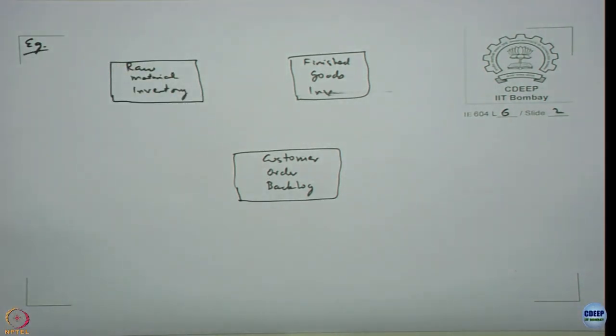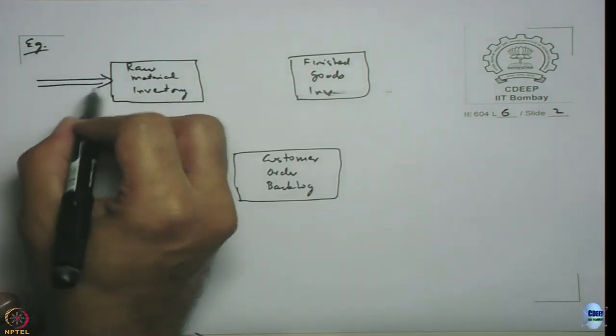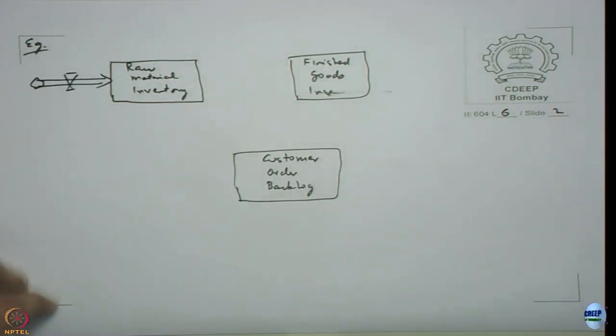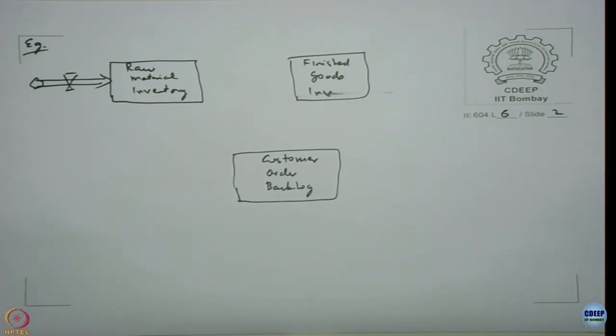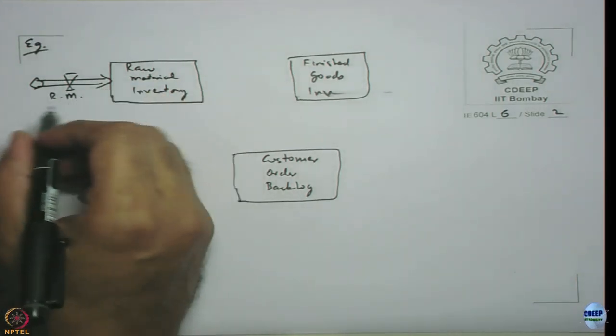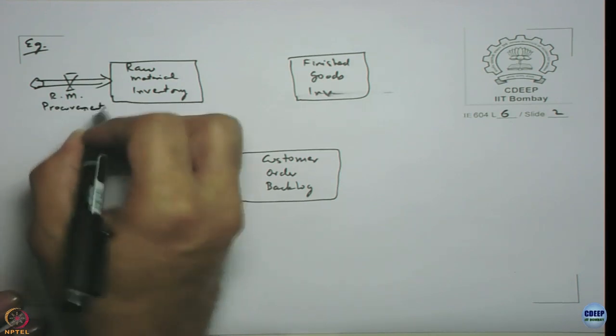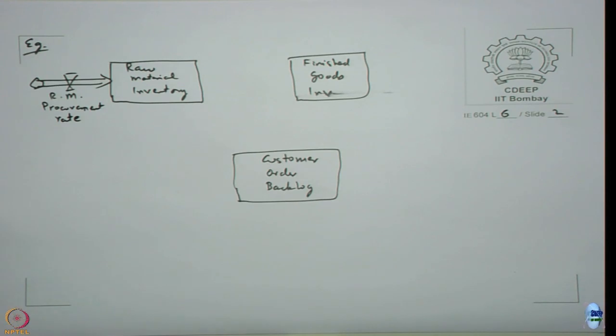These are the three stocks we have and the description starts out saying that manufacturing firm orders raw materials from outside. We can or rather we need to have a flow, a flow which is coming into the raw materials, otherwise how is the stock going to change. We need to have a flow, we cannot have anything else. That will be the rate at which I am going to be procuring materials. I can call it as RM procurement rate using RM for raw material.